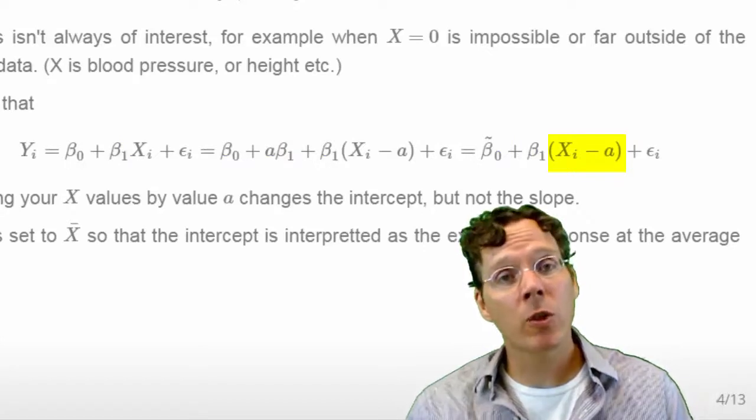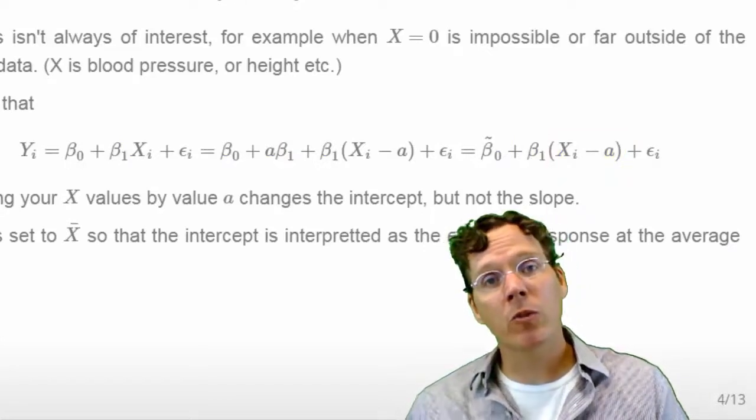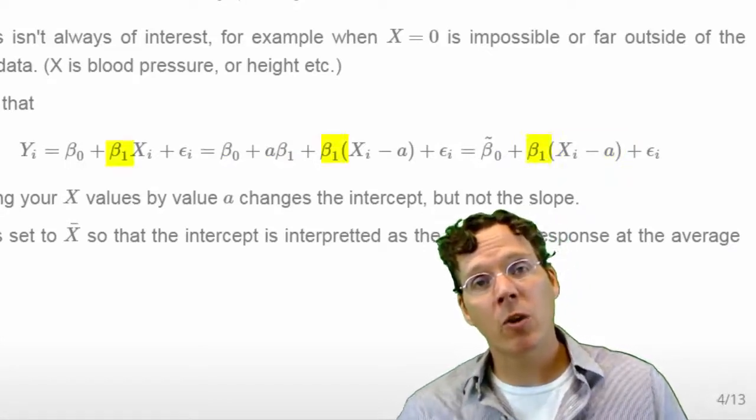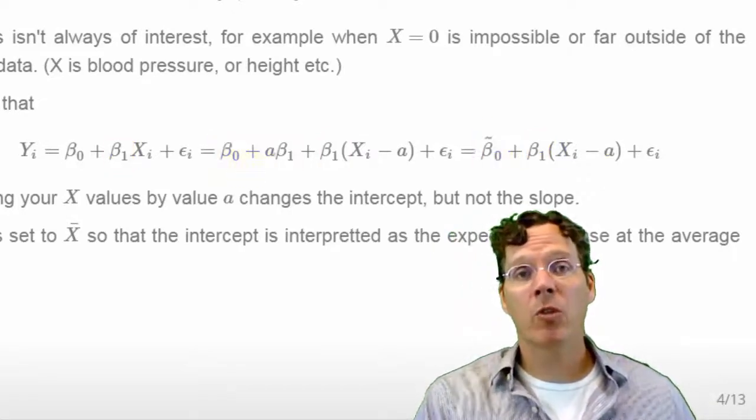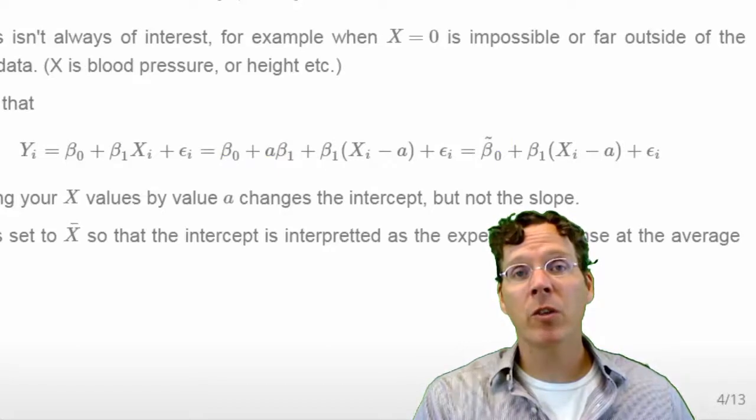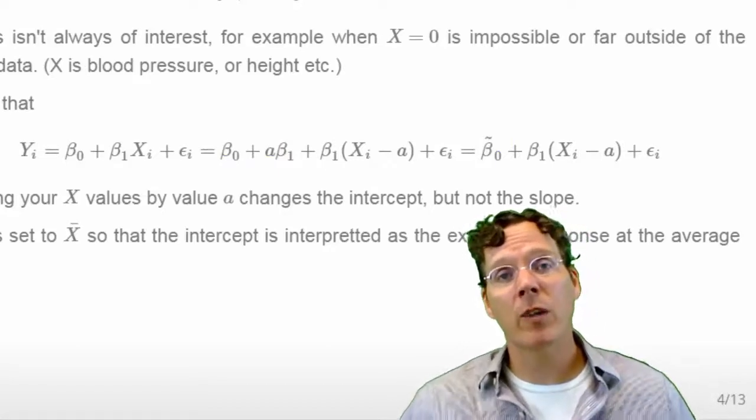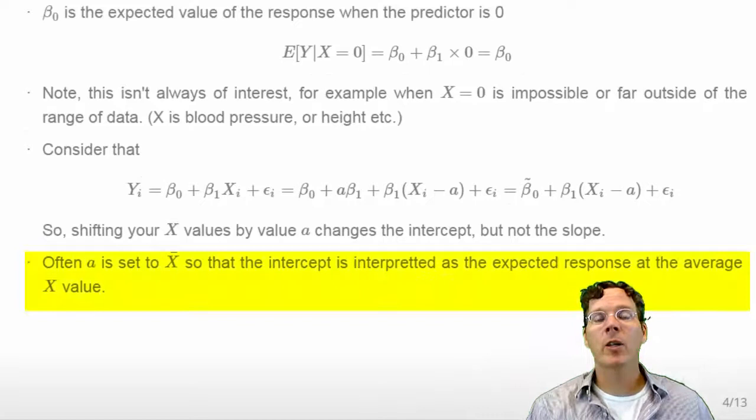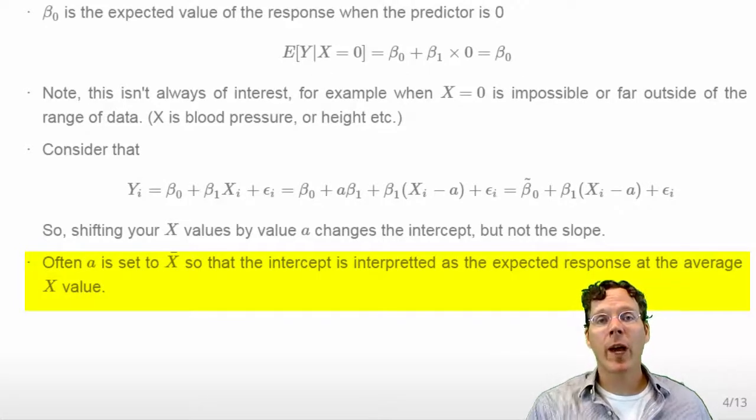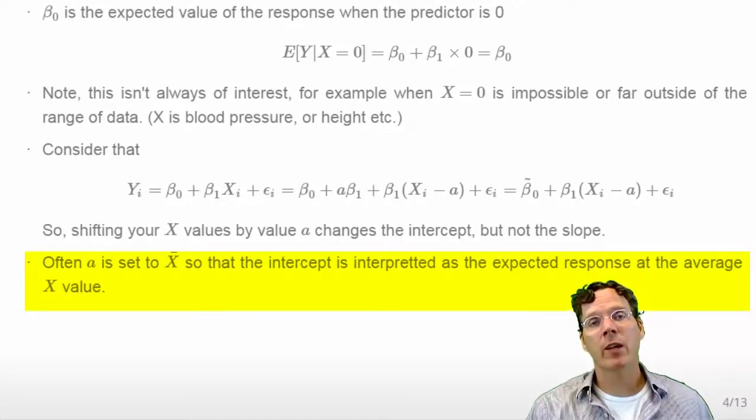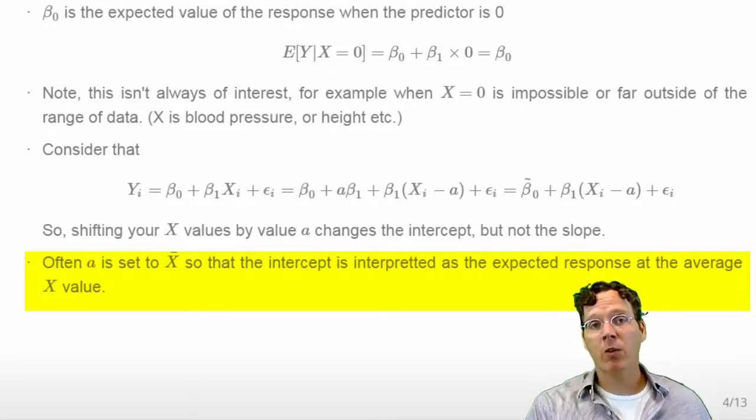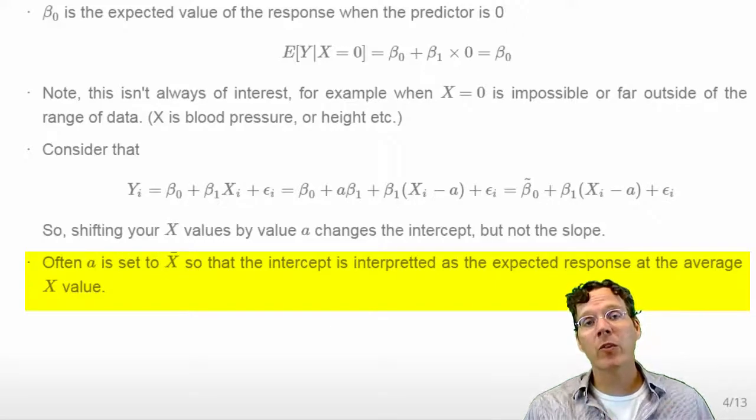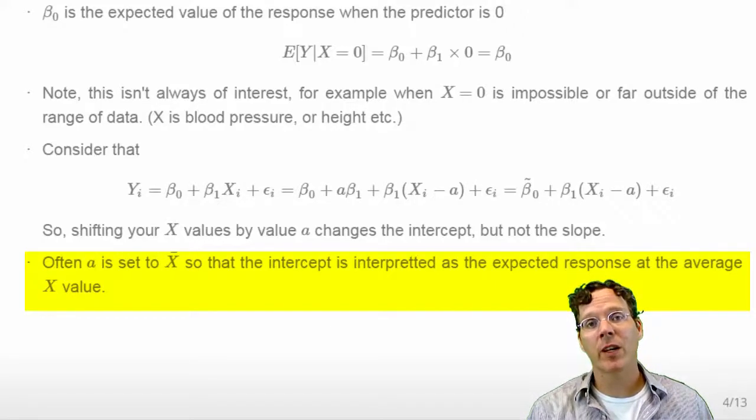So this goes to show you that if you shift your regressor by a constant, it doesn't change the slope, however it does change the intercept. Now the intercept is interpreted not when X is zero, but when X is this value that you shifted it by a. A very common constant to do is the average, set a equal to the average of the X variable. Then your intercept will be interpreted as the expected value of the response when the regressor is at the average value of the X's.